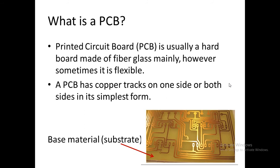First of all, what is a PCB? A Printed Circuit Board is usually a hard board made of fiberglass primarily. However, it may be flexible. Normally, we use hard boards only. A PCB has copper tracks or traces on one side or both sides in its simplest form. This is a simple PCB where this is the base material on which there is copper pasted. The base material is also called the substrate, and we have some copper tracks.